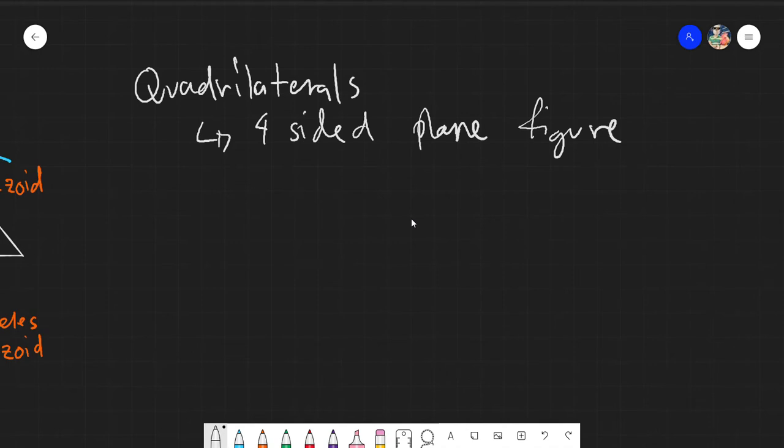So quadrilateral will have three major kinds. And this would be based on parallelism. Basically, parallelisms are just simply the concept of lines being, when extended, they will never meet each other. They will never meet each other, and that is the concept of parallelism.